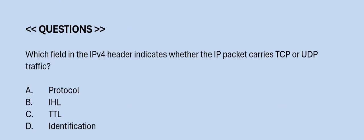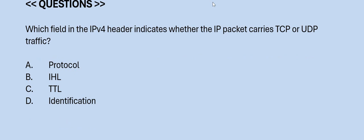Next question: Which field in the IPv4 header indicates whether the IP packet carries TCP or UDP traffic? Option A: Protocol. Option B: IHL. Option C: TTL. Option D: Identification. The correct answer is Option A.